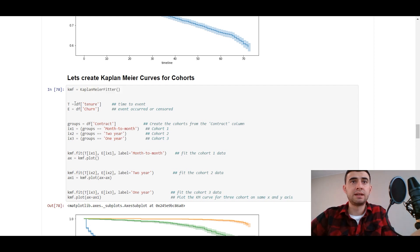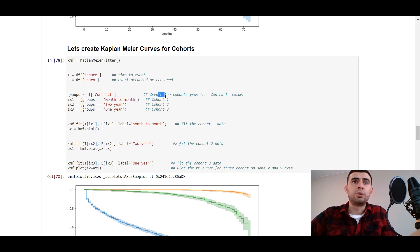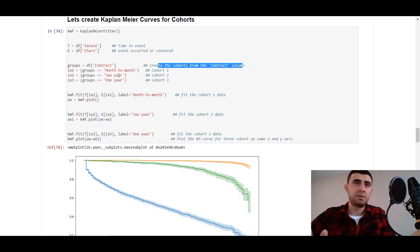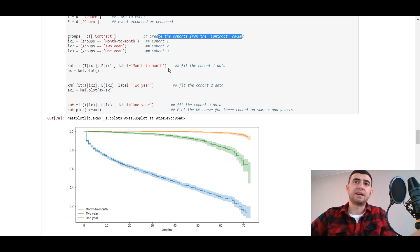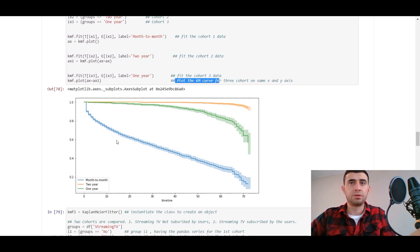Our next step would be creating cohorts. We've got the Kaplan fitter from the lifelines library, time to event and event occurred or censored, and we can create the cohorts from the contract column. For example, we've got different cohorts: month to month, two year, one year. Feed cohort one data, then feed cohort two data, feed cohort three data, and plot the survival curve for different cohorts.